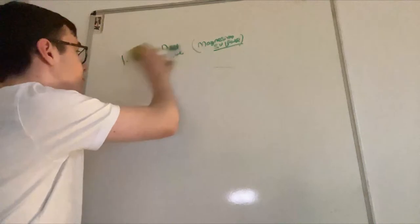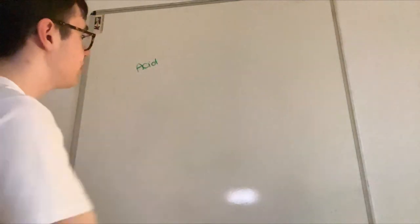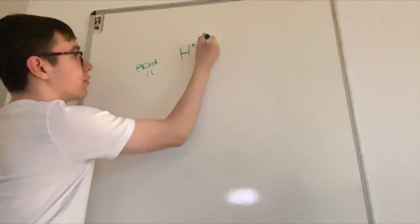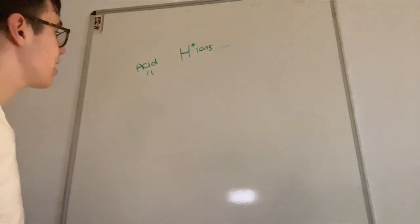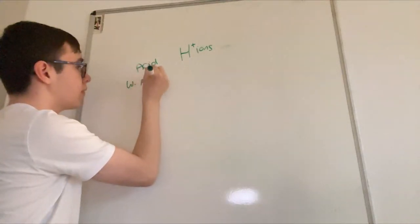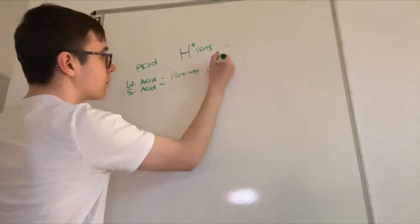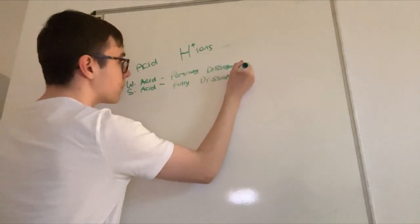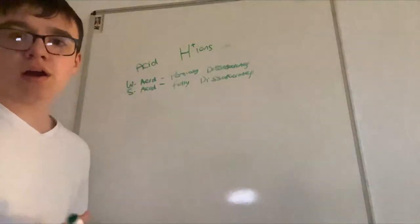Next: neutralization. What is an acid? It is a substance which dissociates in water to make hydrogen ions, or a singular proton. A weak acid partially dissociates, and a strong acid fully dissociates.